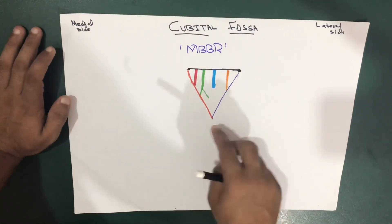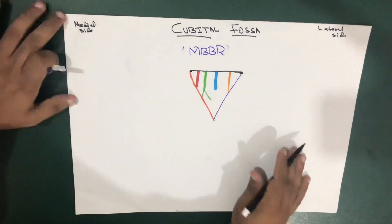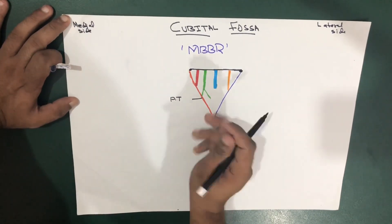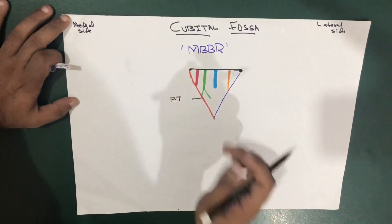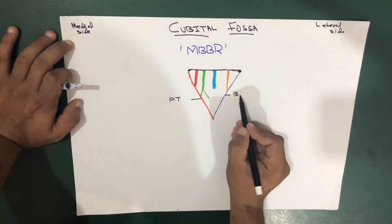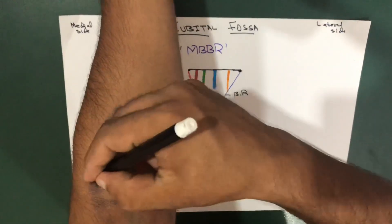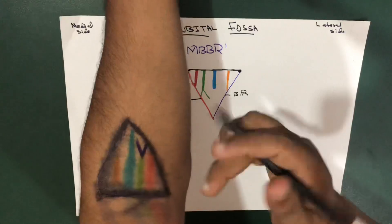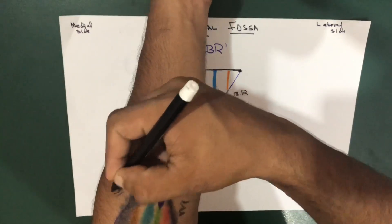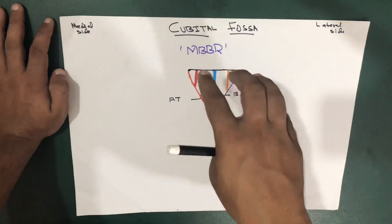As we go downward on the medial side, the medial boundary is formed by the pronator teres muscle (PT). On the lateral side, we have the brachioradialis muscle (BR). So the base is the imaginary line between the two epicondyles of the humerus, the medial boundary is pronator teres, and the lateral boundary is brachioradialis.